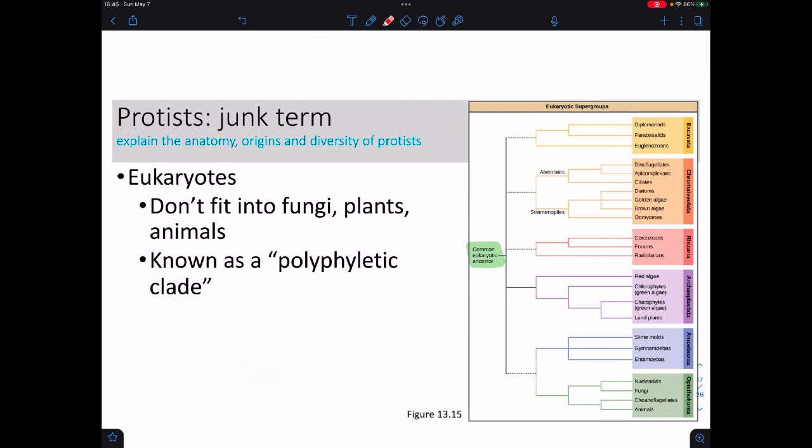The term protist itself is a junk term because it's basically saying, hey, you're not a prokaryote, you're not an animal, you're not a plant, you're not a fungus, so we're going to call you a protist. And in biology speak, this is referred to as being a polyphyletic clade, meaning we're clumping all sorts of different organisms—so the excavata and the chromalveolata and the rhizaria and the archaeplastida and the amoebozoa and the opisthokonta. We have all these that are really weird together and we're just kind of clumping them all up and saying, see, these are all protists, even though they don't necessarily have anything to do with each other.